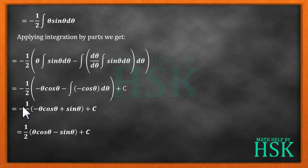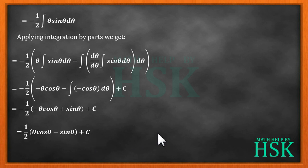Multiplying the minus sign inside the bracket, we obtain (1 by 2) times (theta cos theta minus sin theta) plus c.